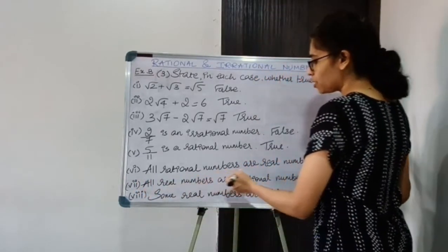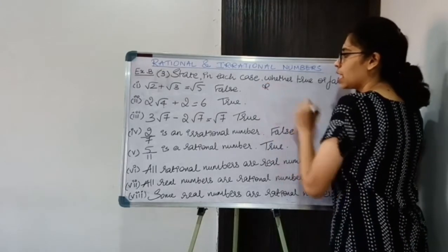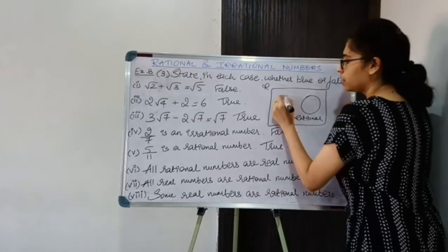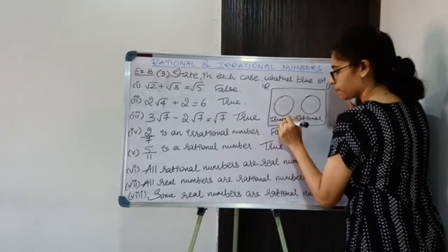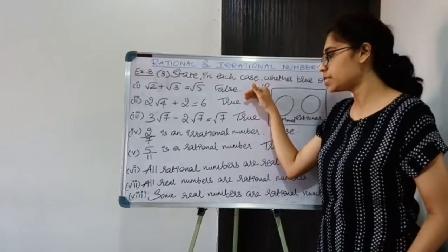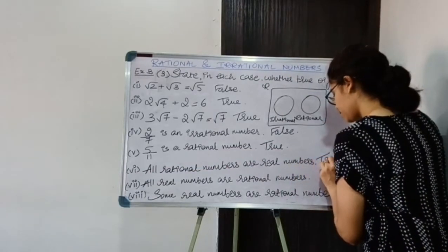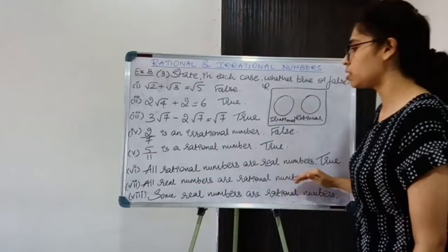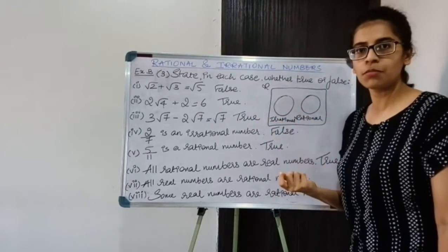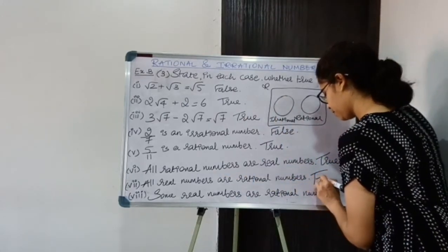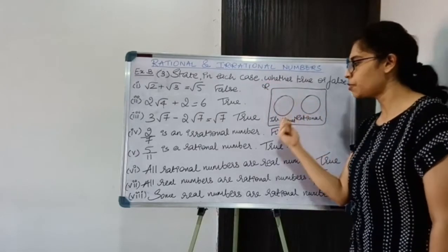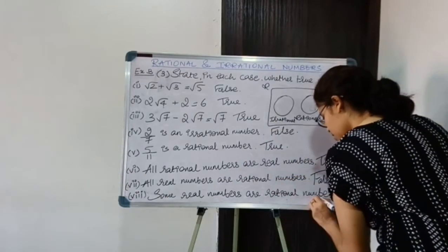Coming to the sixth statement: all rational numbers are real numbers. The set of real numbers R consists of all rational and irrational numbers, so all rational numbers belong to the set of real numbers. The statement is true. Seventh: all real numbers are rational numbers — this is false, because some real numbers are irrational. Eighth: some real numbers are rational numbers — yes, some are rational and some are irrational. The statement is true.